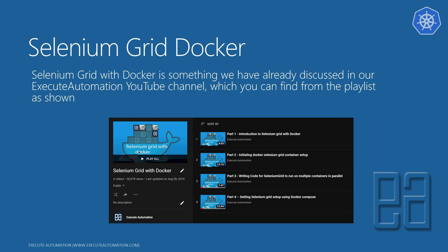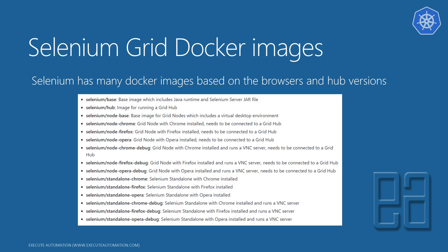Selenium by itself has many Docker images available on hub.docker.com. Some of these include selenium/base, which includes the Java runtime and Selenium server JAR, and there are hub and node images with different browsers — including variants with debug capabilities and with a VNC server installed. These are the Selenium node images you can use within Kubernetes to attach and run your tests.